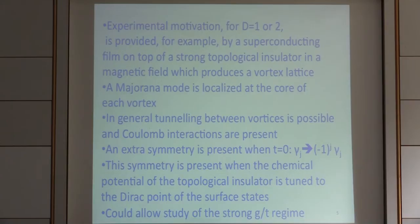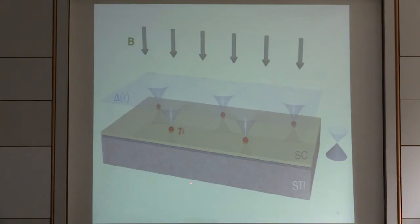Is there some experimental motivation for this model? Apart from Majorana fermions being trendy these days, there have been some concrete proposals. The most direct one involves a vortex lattice in a superconductor. We have a strong topological insulator, we put a superconducting film on top, apply a magnetic field, and get a vortex lattice. It's expected that at the core of every vortex, there will be a Majorana fermion.